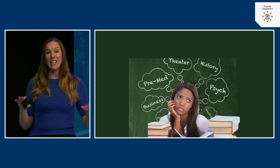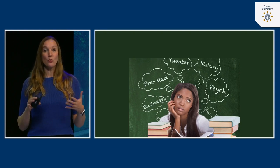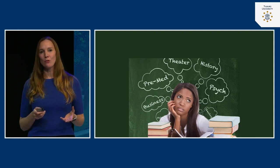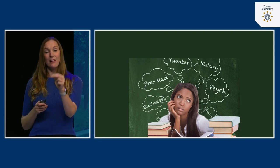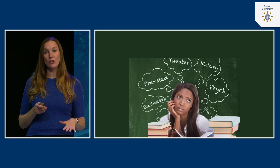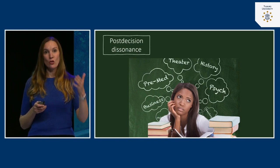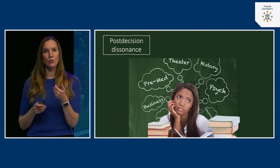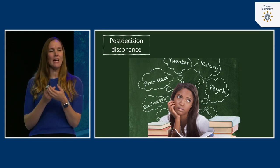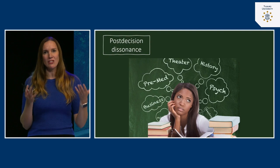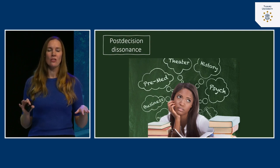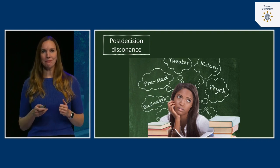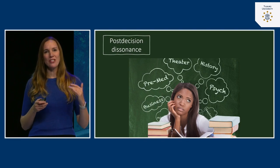Choosing one option means rejecting all the other choices, which were also very appealing. Luckily, our minds help us out: the moment we start making a choice, we begin devaluing all the alternatives. This is called post-decision dissonance. Once you started studying psychology, that option became more attractive — you saw all its benefits — while all other options became less attractive; you started seeing the downsides of studying history or philosophy.